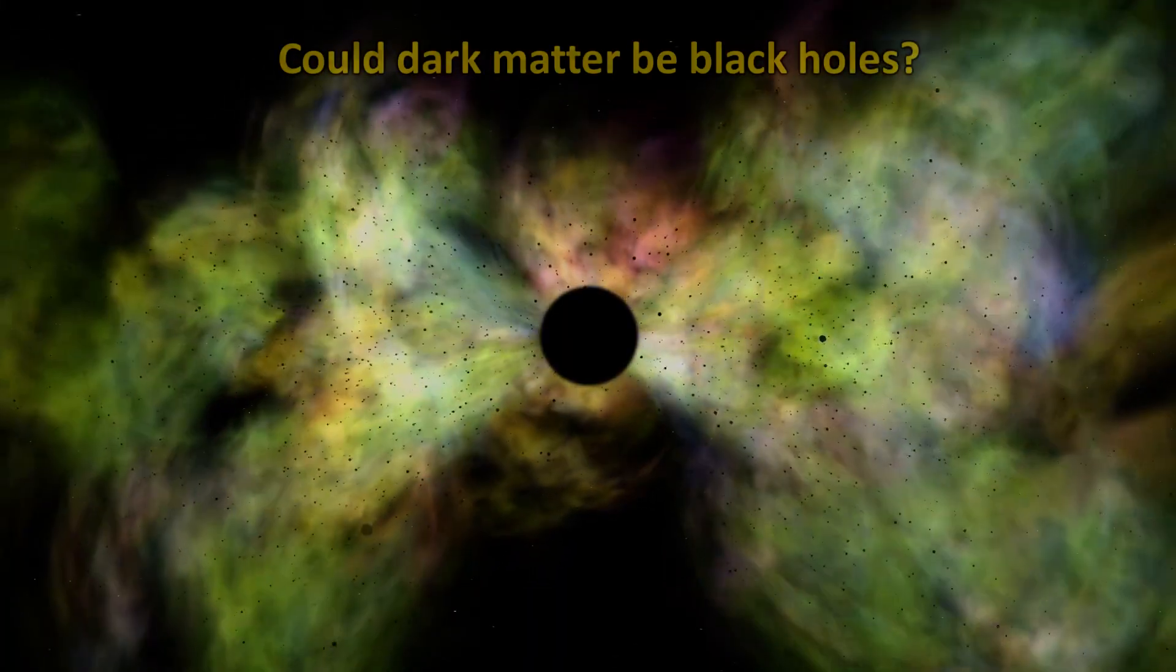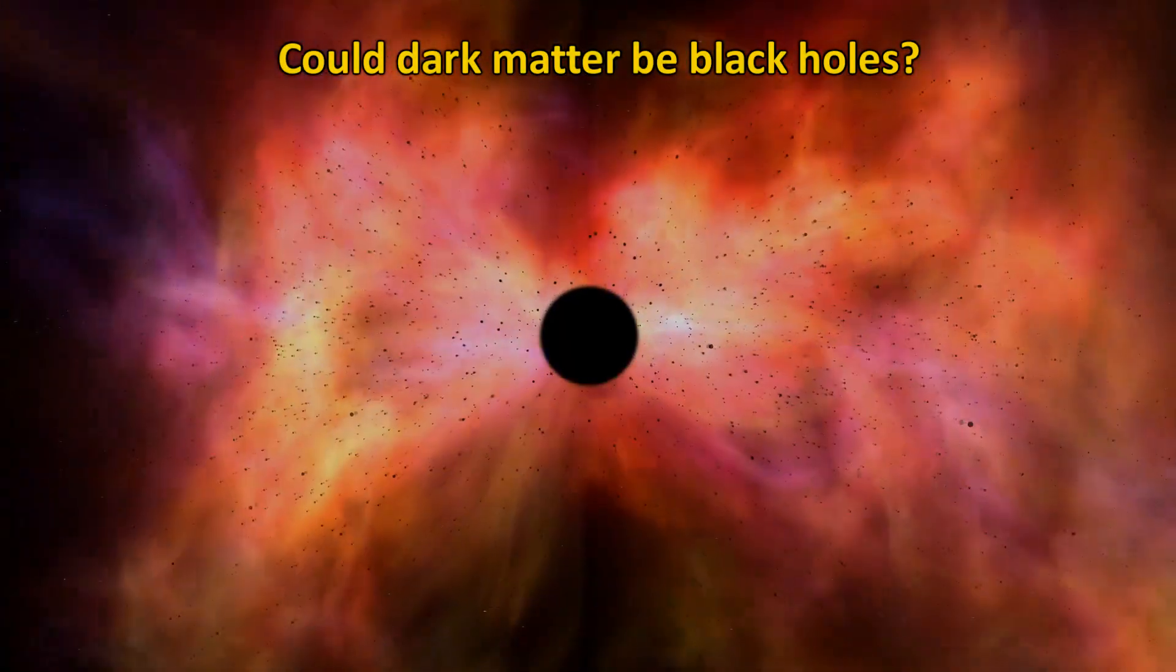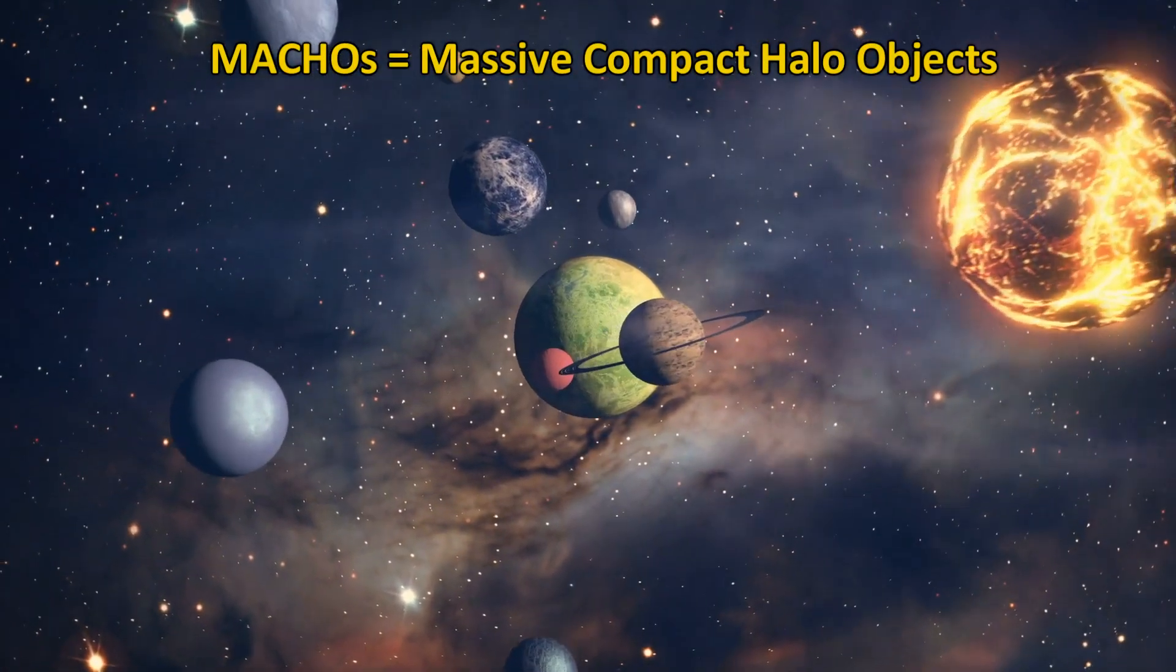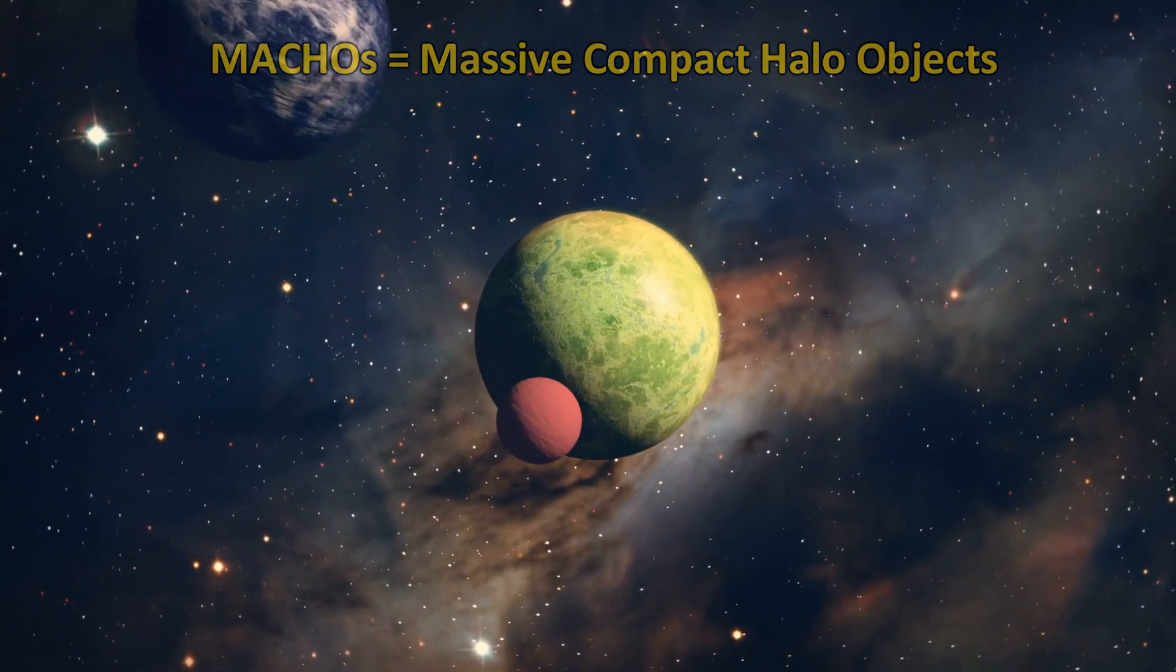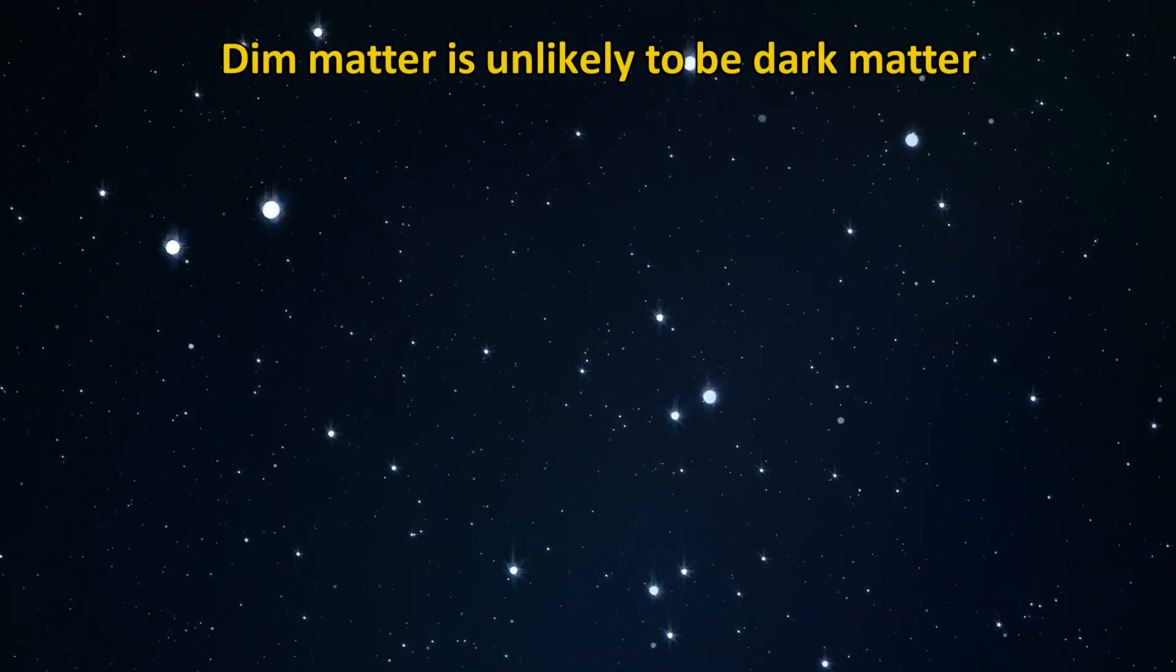Now how do we know that dark matter is not just ordinary matter that is hard to see, like dim stars or black holes? This was thought to be a possibility decades ago, and some of these were categorized as machos, or massive compact halo objects. But today we have so much observational data that this possibility has been all but ruled out.